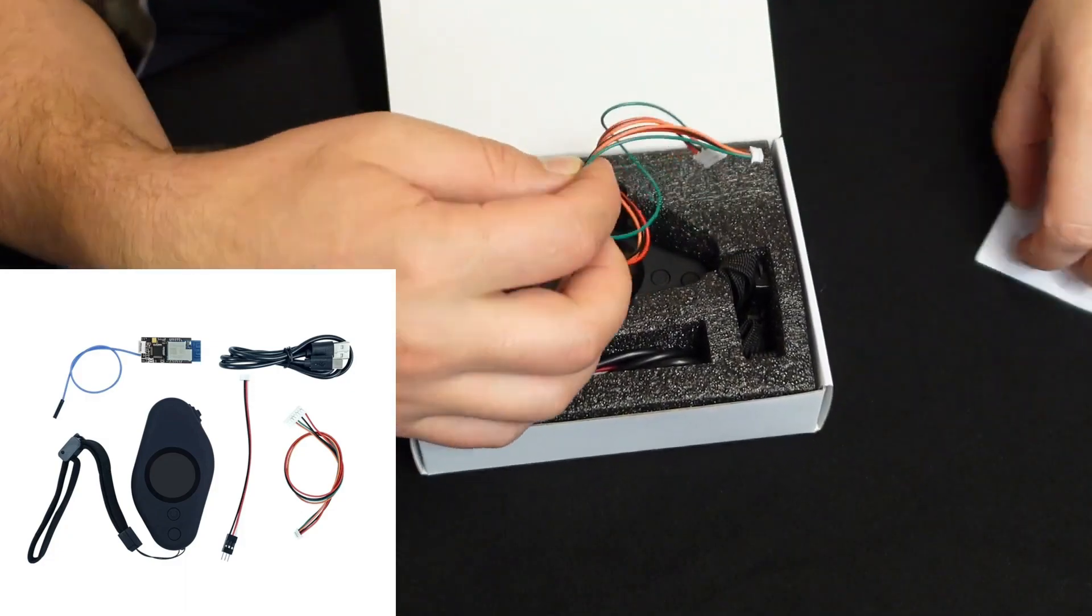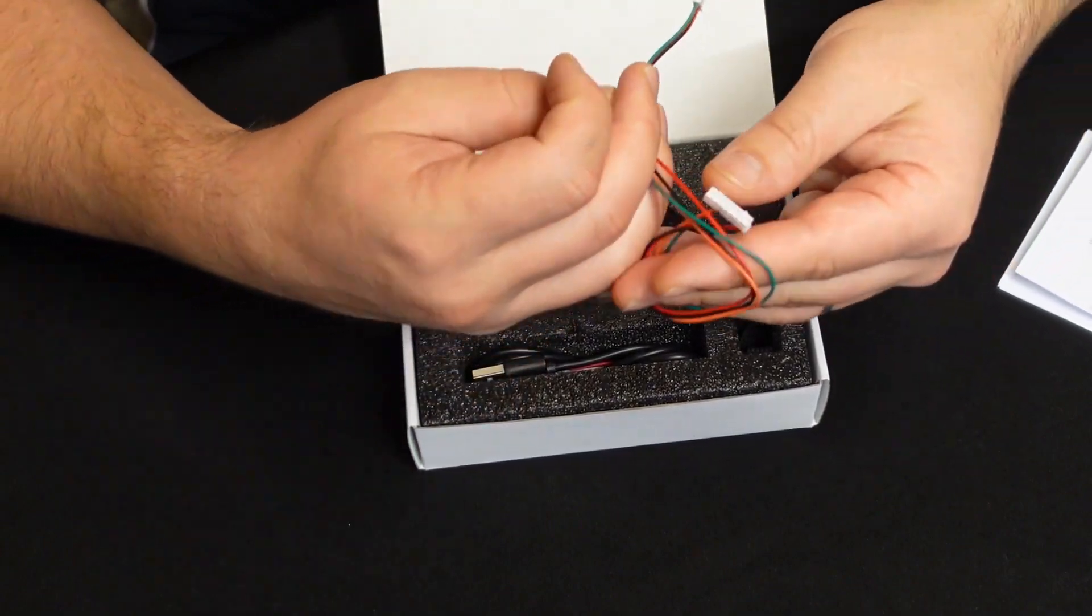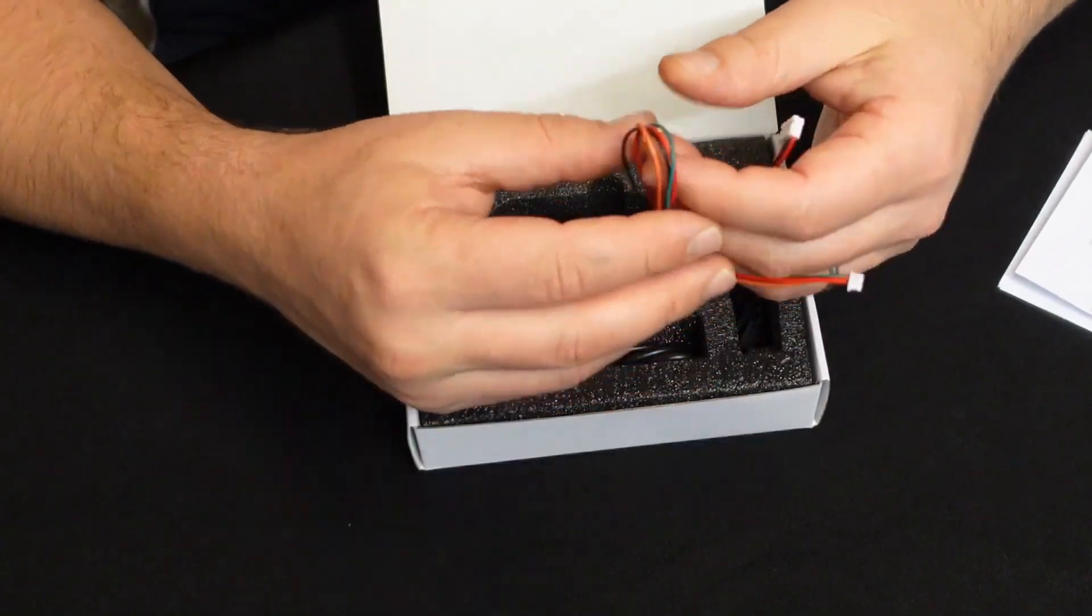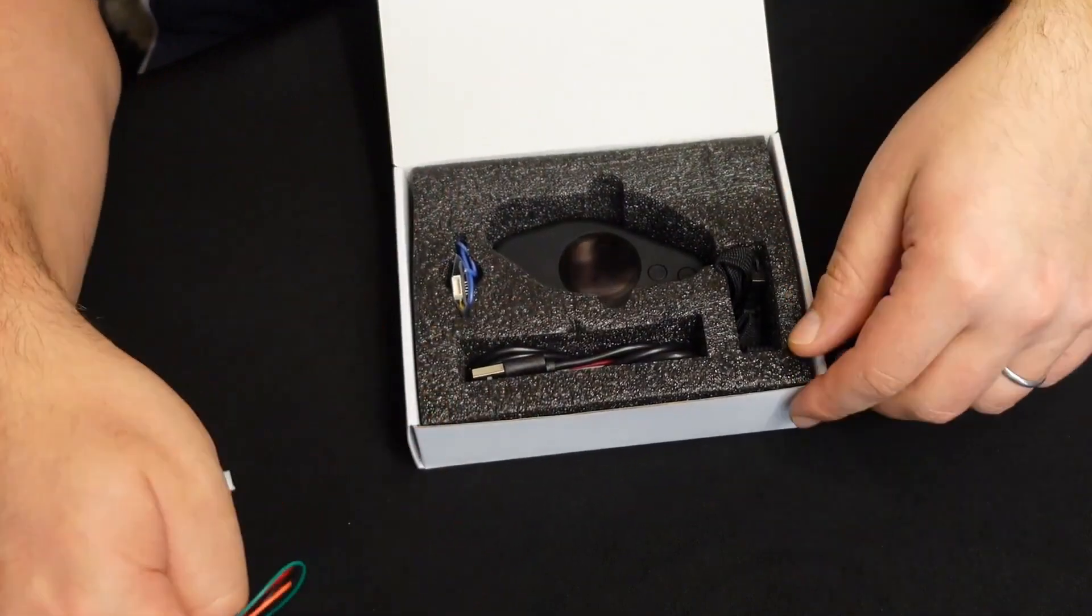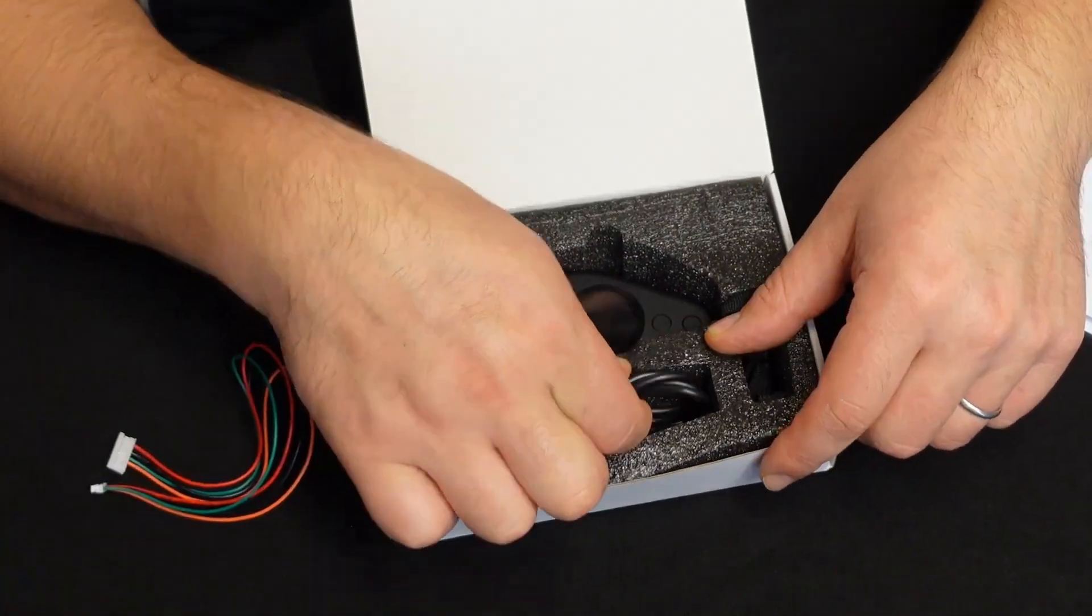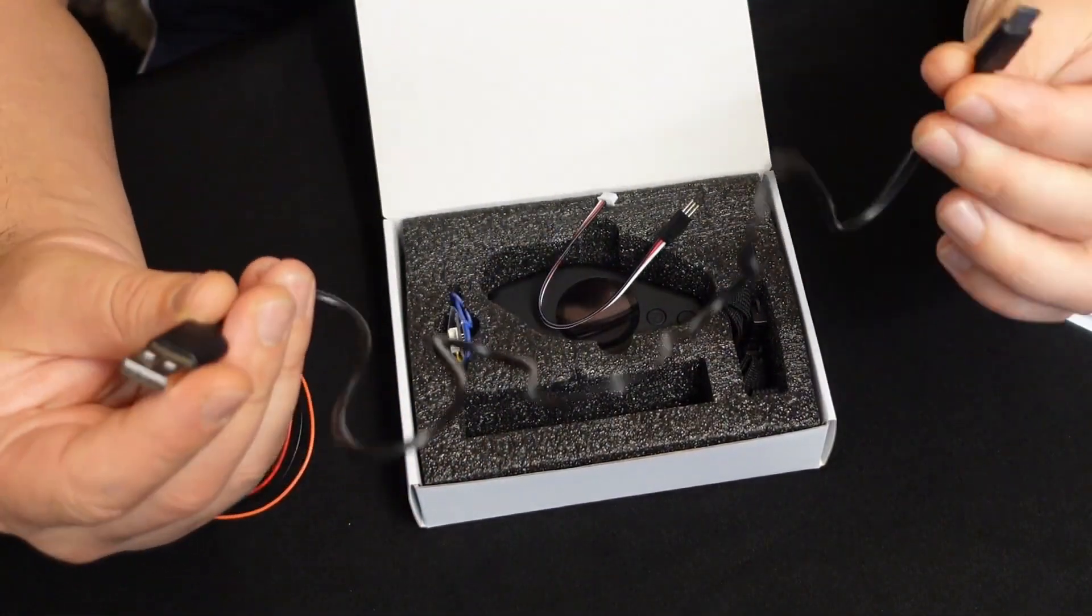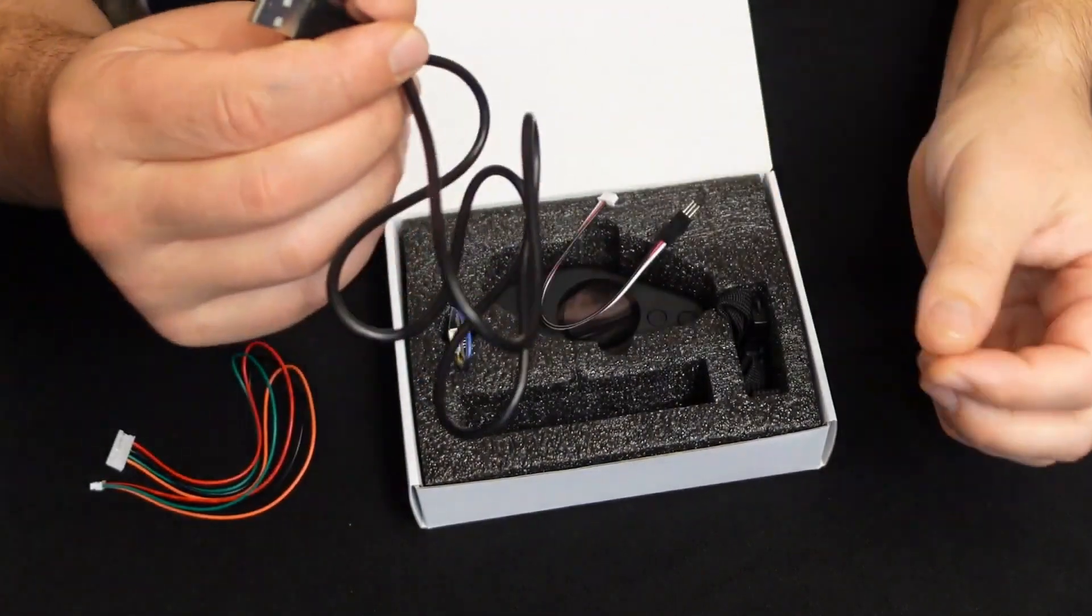You're also going to get some cables. By the way, when you order it, make sure you do mention what kind of ESC you're going to use it for. I've got VESC6 based ESC, so I've got this cable right here. You will also get the cable for the firmware upgrade and also for the charging, which is quite nice.